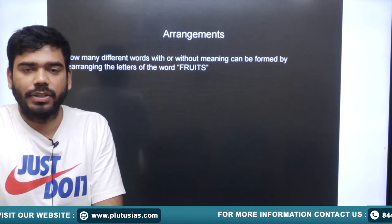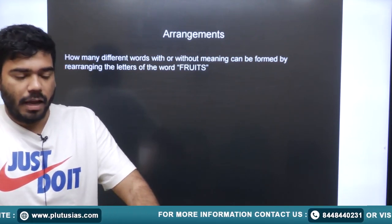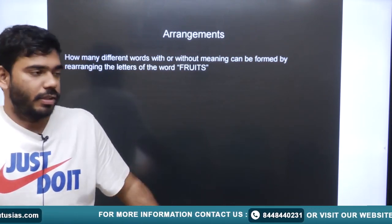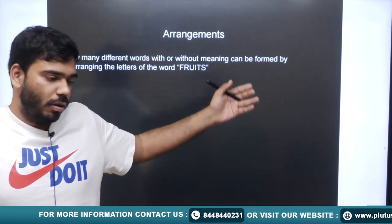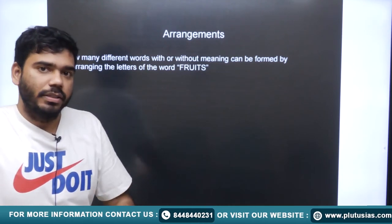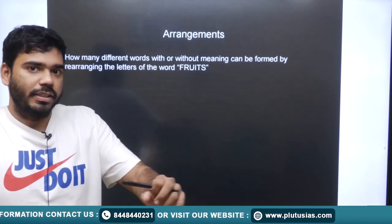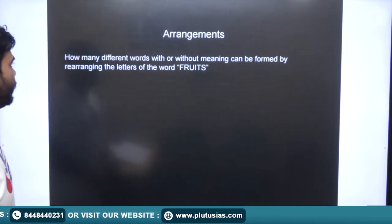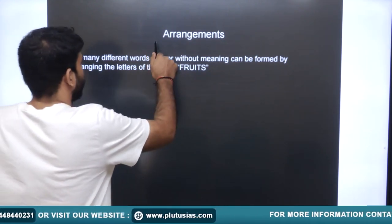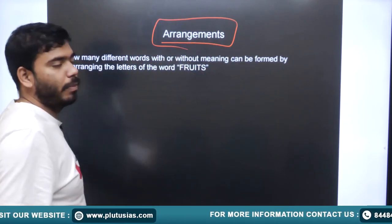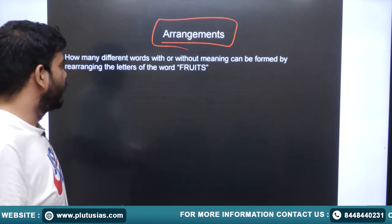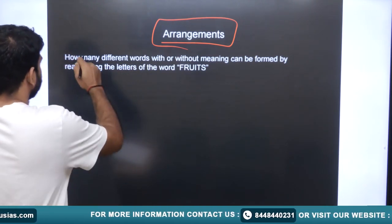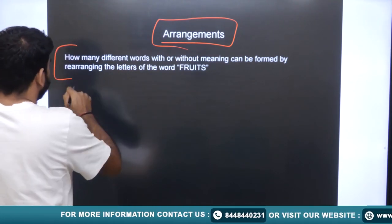In permutation and combination, we have to calculate the number of possible ways in which given constraints are satisfied and all possible conditions are also satisfied. We generally have to find the number of arrangements, so let's start directly with an example.